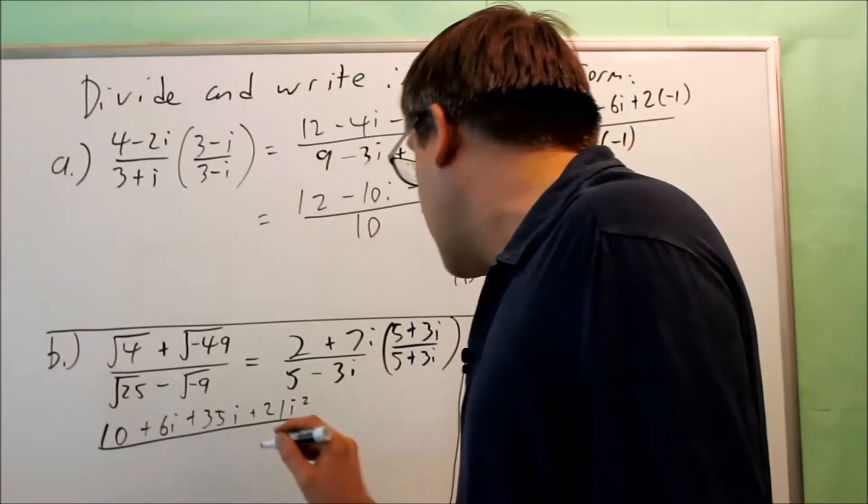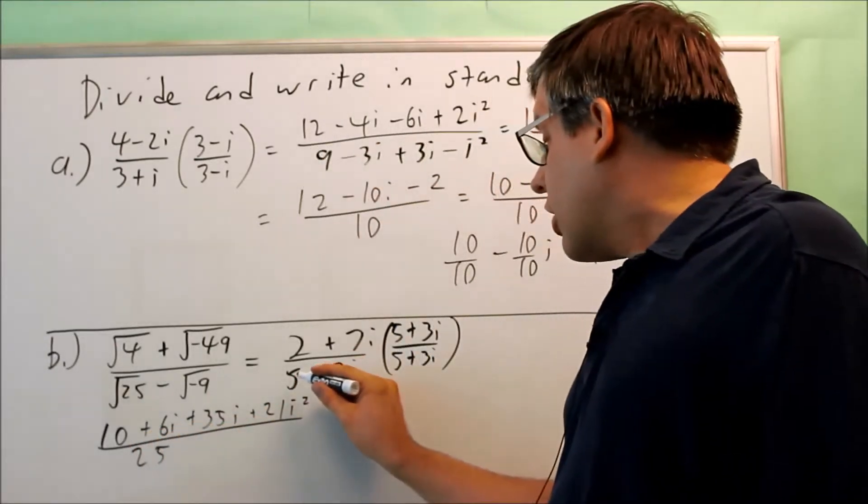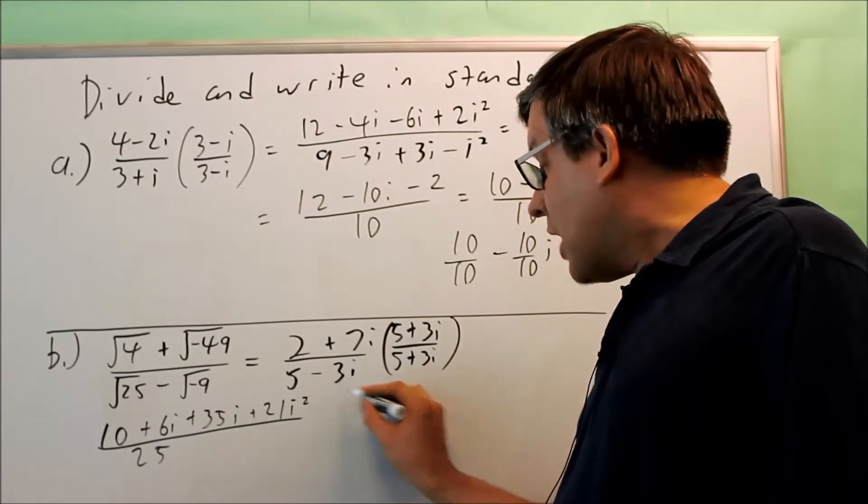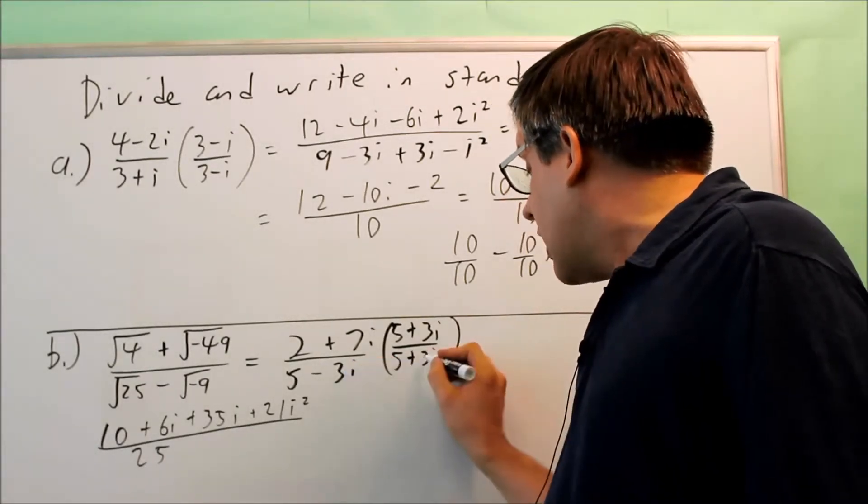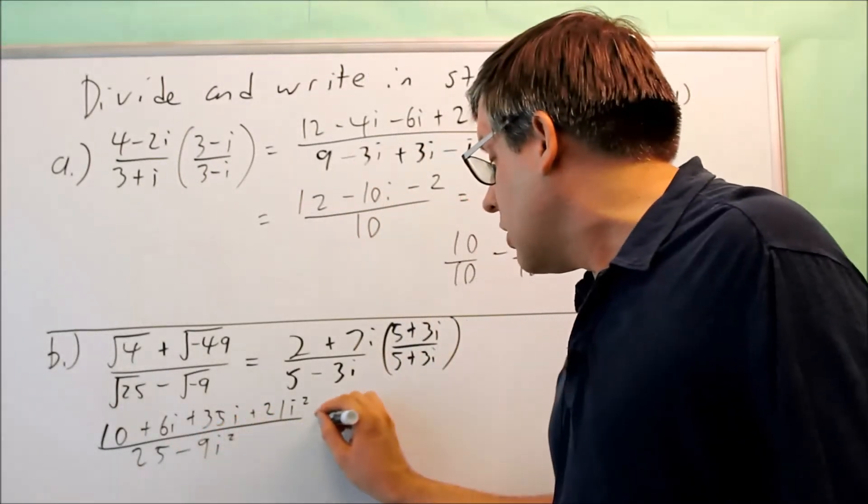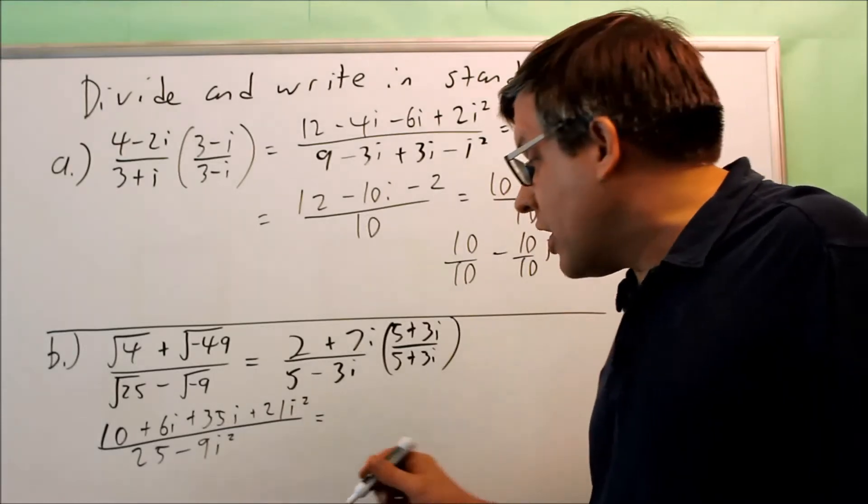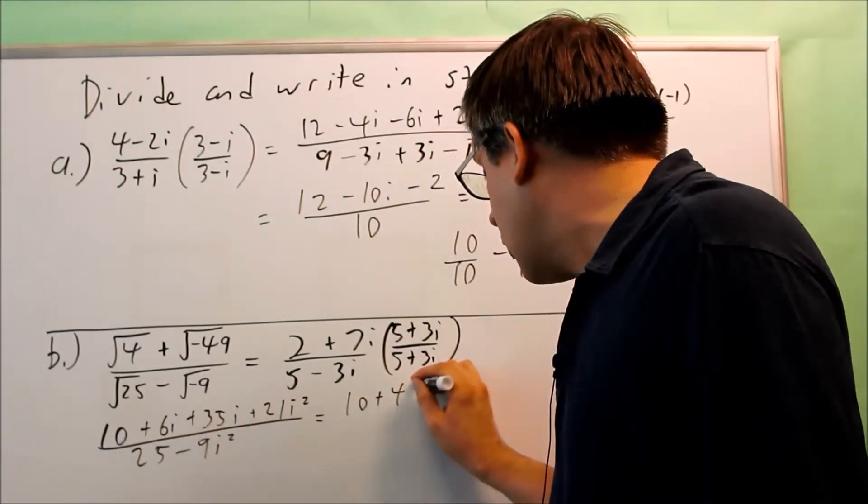On the bottom, you're going to get 5 times 5 is 25. Now you're going to get plus 15 and minus 15. That's going to give you a 0. And then you get negative 3i and positive 3i. That gives you minus 9i squared. Now we're going to go ahead and simplify further.